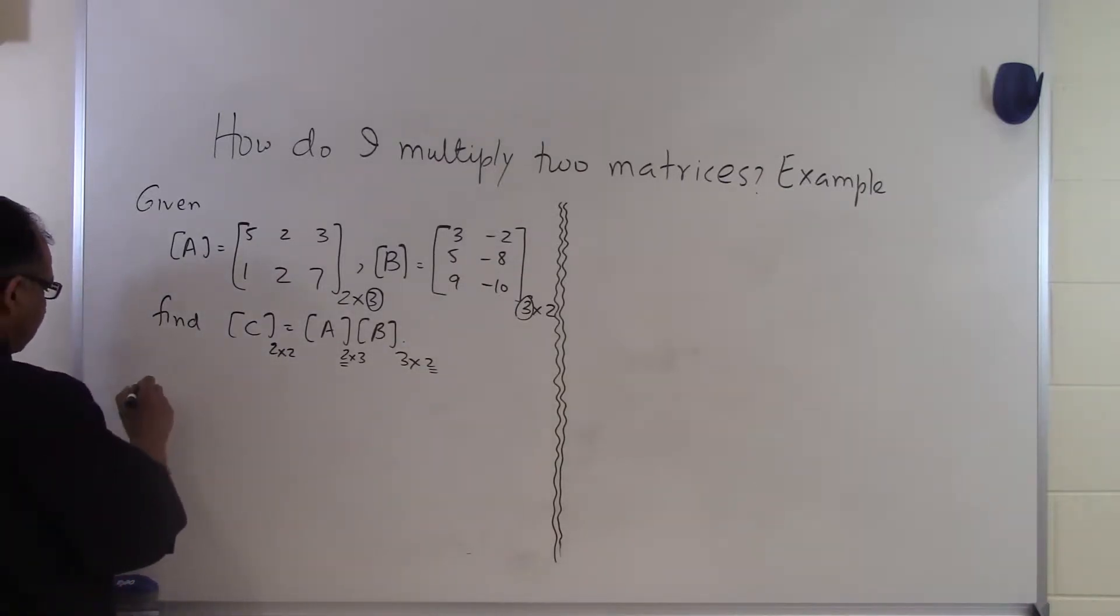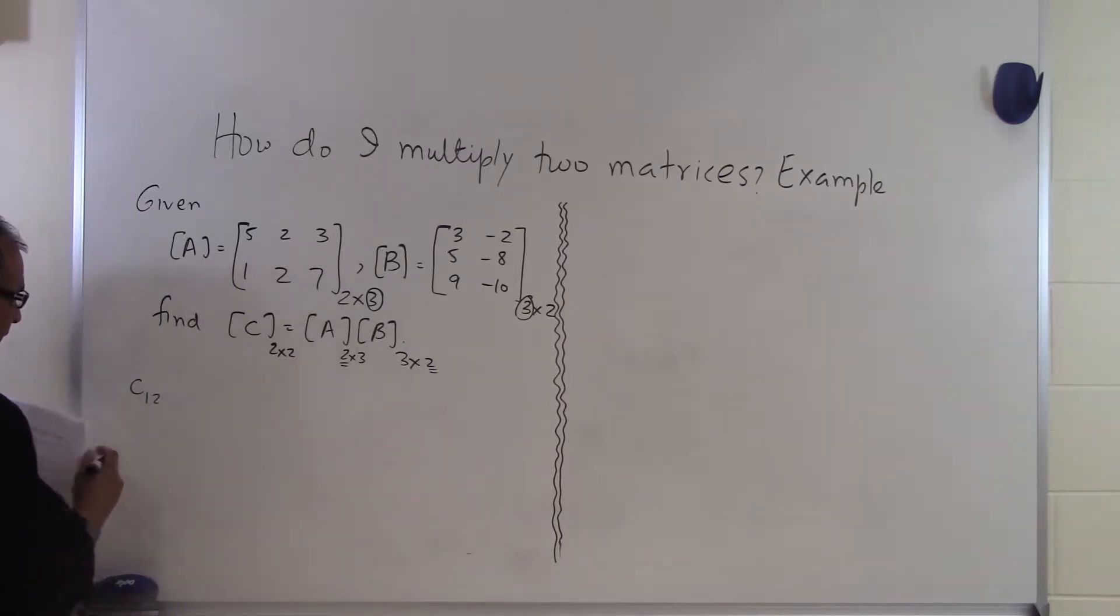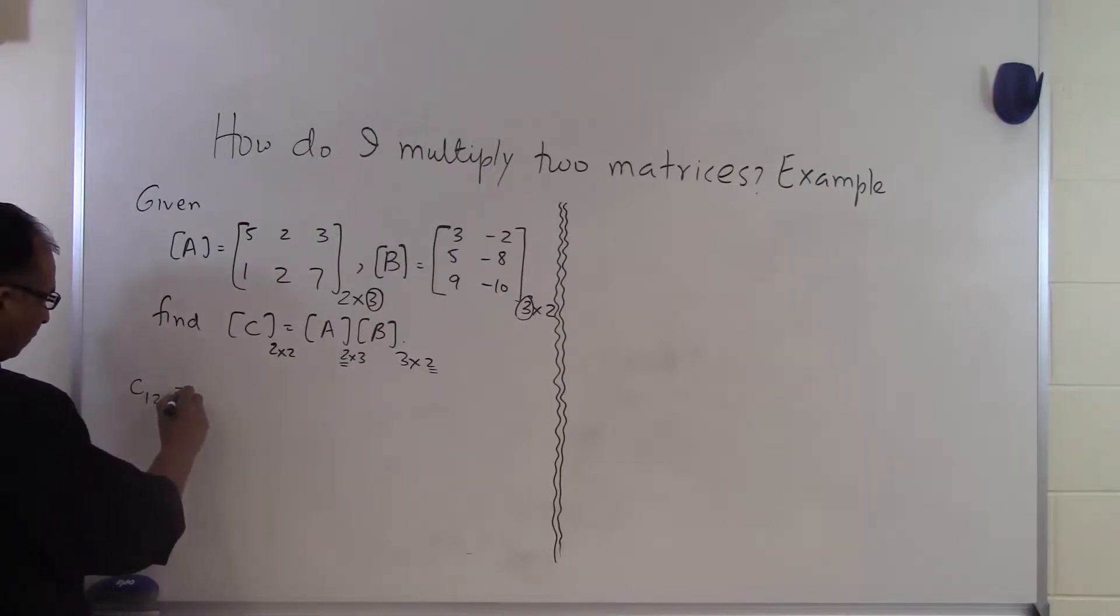So let's suppose, let's go and find out what C₁₂ is. So if C₁₂ has to be found out, how do we go about doing that? C₁₂ will be equal to what?